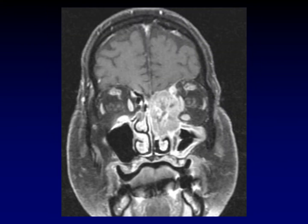This is an example of an actual neoplasm secondarily involving the orbit. You can see this heterogeneously enhancing mass is pushing on the orbital contents. It's not really invading the way that the fungal case was showing invasion — it's just pushing things out of the way. This is metastatic disease, I believe from a lung primary.